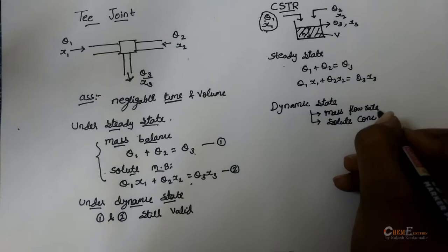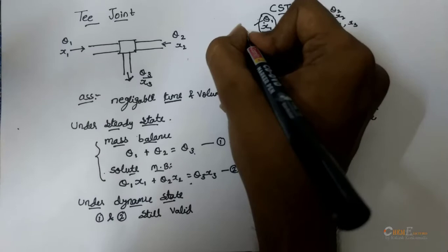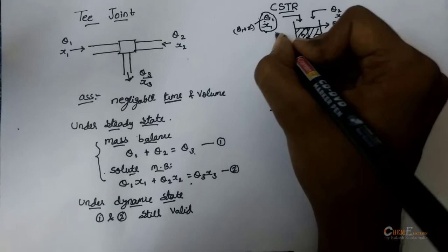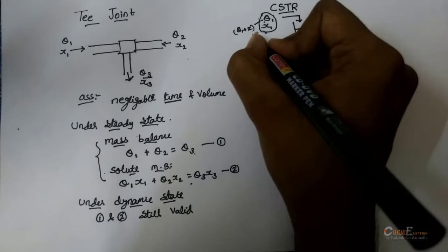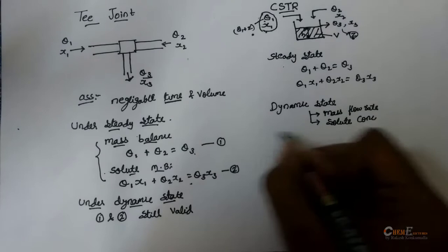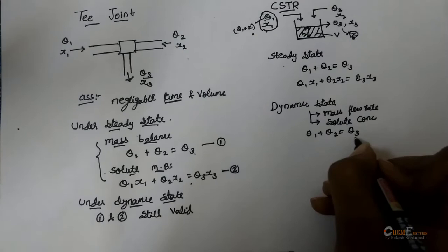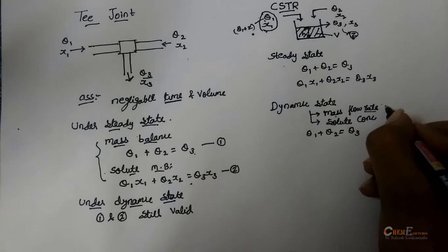Let us take the mass flow rate changes. So, the mass flow rate Q1 is changed to Q1 plus Z. And for this change, in the output, this Z flow rate will be added. So, whatever extra is added here, it is coming as an output. So, there won't be any accumulation here. And the equation 1 is still valid for dynamic state. That is Q1 plus Q2 equal to Q3. So, if mass flow rate changes, there won't be any change in equation.